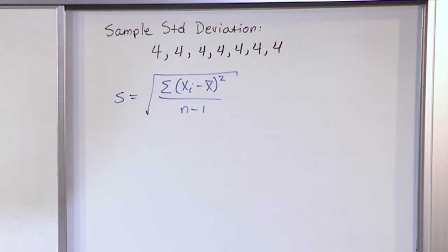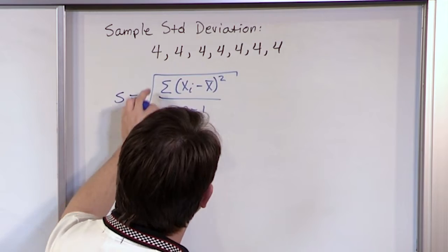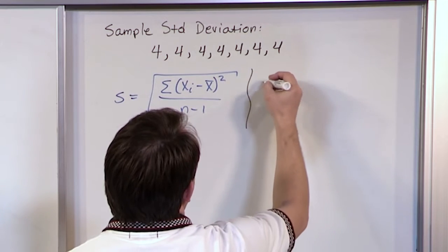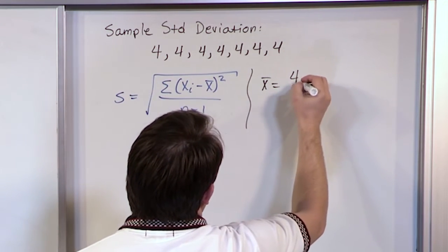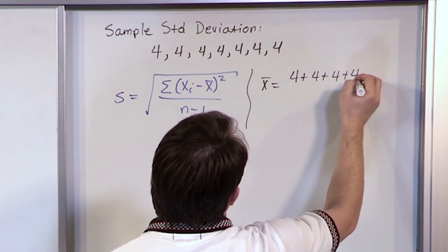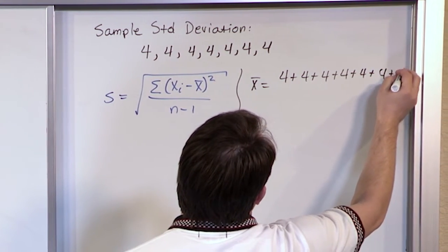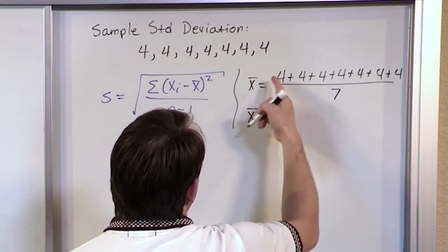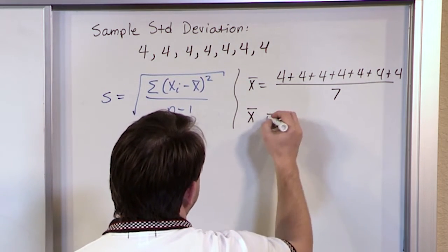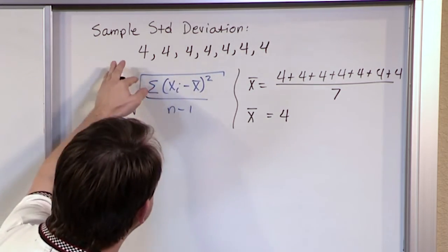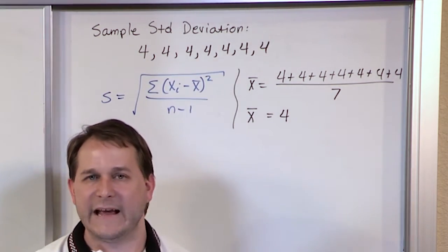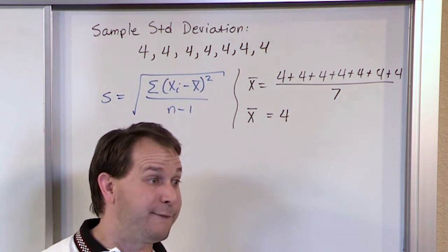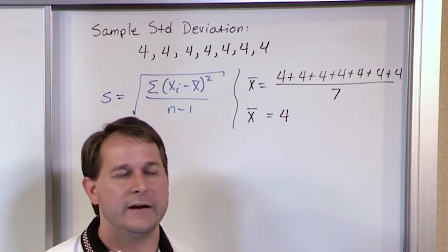Since this is a sample standard deviation, s equals the square root of the sum of xi minus x-bar squared, divided by n minus 1. First, find x-bar: 4 plus 4 plus 4 plus 4 plus 4 plus 4 plus 4, divided by 7. When you add all this up and divide by 7, you just get 4. That makes sense because if every single data value is identical, the average value is the same as all of the values in the data set.